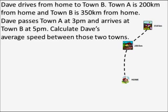Dave drives from home to town B and passes through town A. Town A is 200km from home and town B is 350km from home. Dave passes town A at 3pm and arrives at town B at 5pm. Calculate Dave's average speed between those two towns.